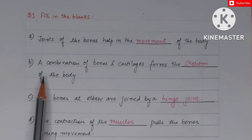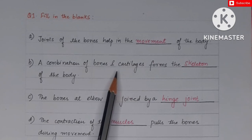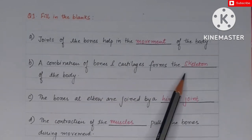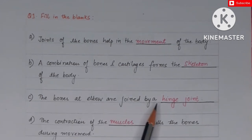The next is: combination of bones and cartilages forms a blank of the body. Bones and cartilages form the skeleton. Then next is: bones at the elbow. The bones are the upper arm and lower arm. At the elbow, which is the joint?